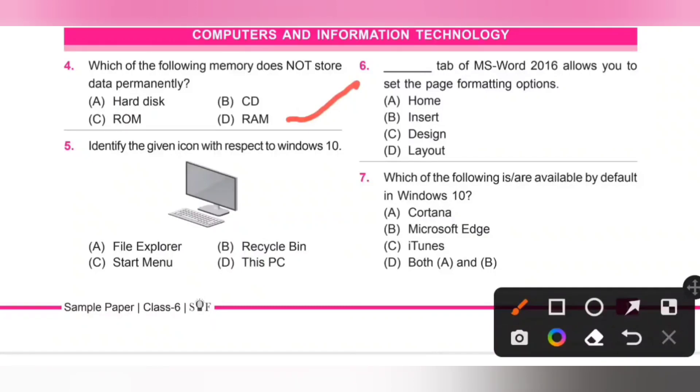Fifth one: Identify the given icon with respect to Windows 10. A. File Explorer, B. Recycle Bin, C. Start Menu, D. This PC. This icon is This PC. Option D.